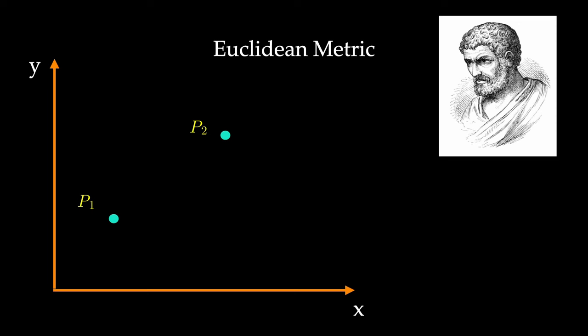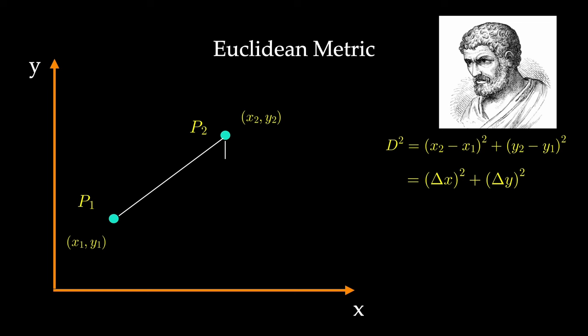To get the distance between those two points, we make use of the Pythagorean theorem. The distance squared, d squared, would be (x2 minus x1) squared plus (y2 minus y1) squared. We call these differences delta x and delta y. So the metric of our Euclidean space is this squared distance, d squared.